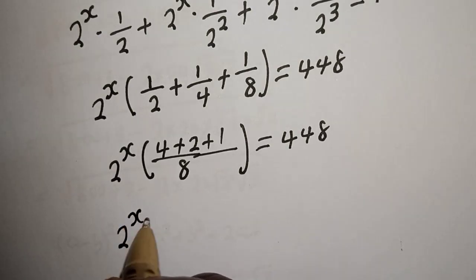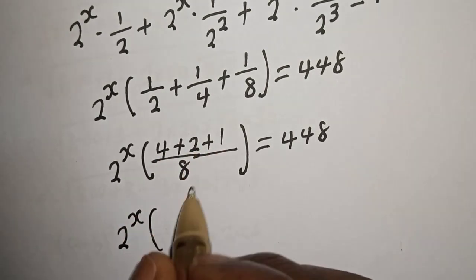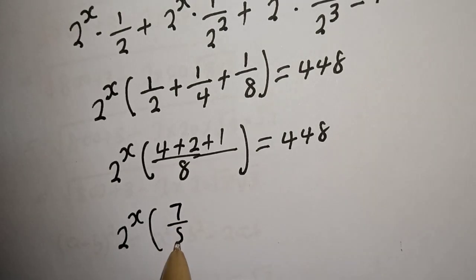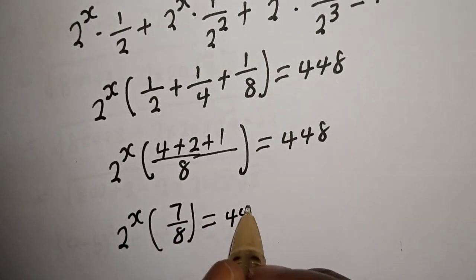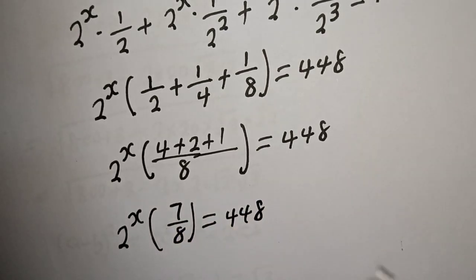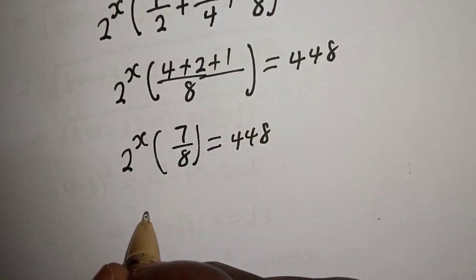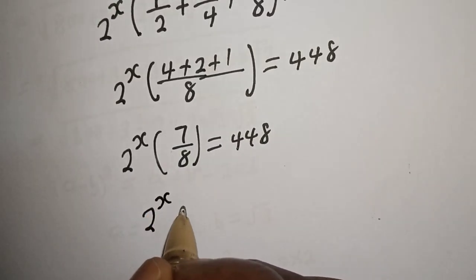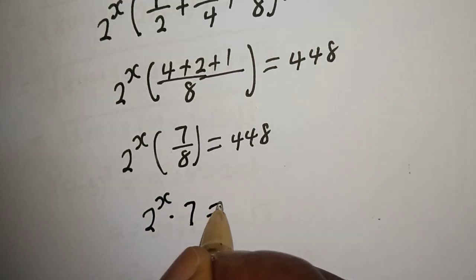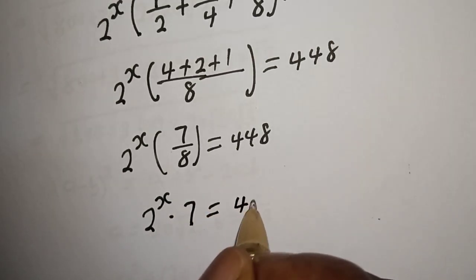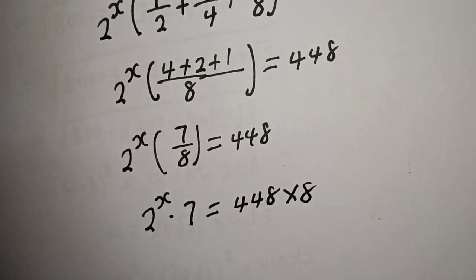2 raised to power s, bracket 4 plus 2 plus 1, that is 7 over 8, is equal to 448. Therefore, cross-multiplying: 2 raised to power s multiplied by 7 is equal to 448 multiplied by 8.